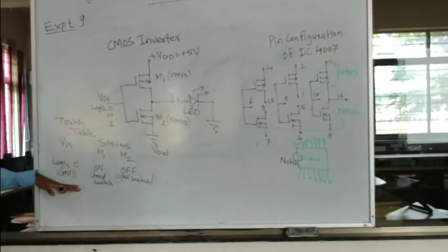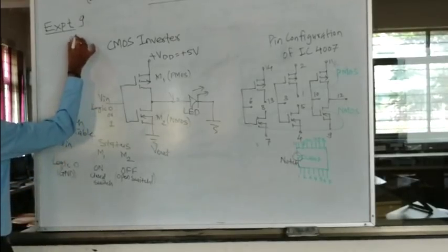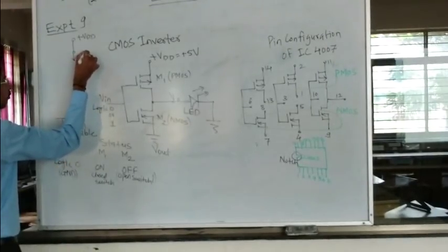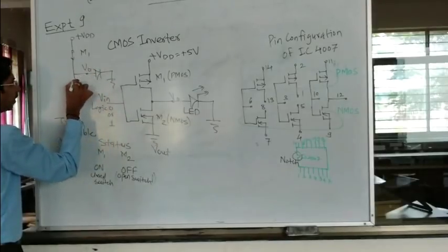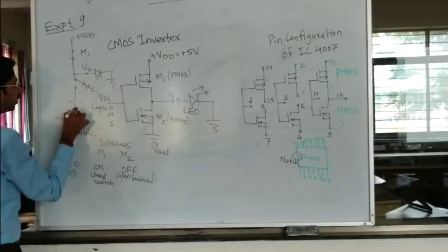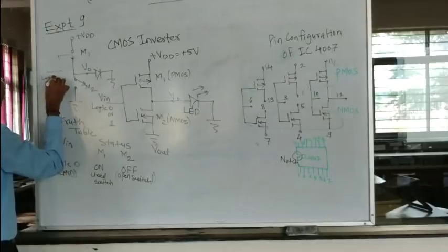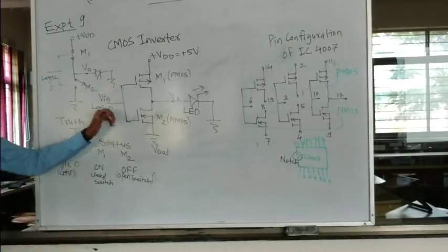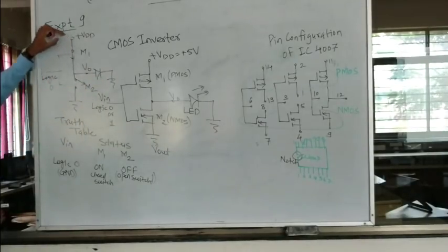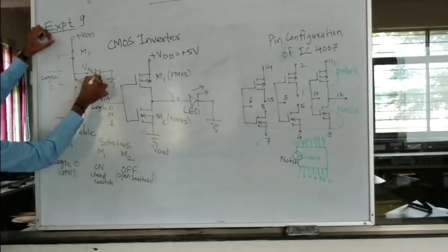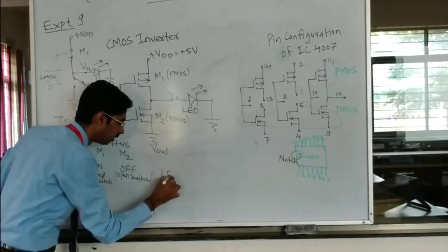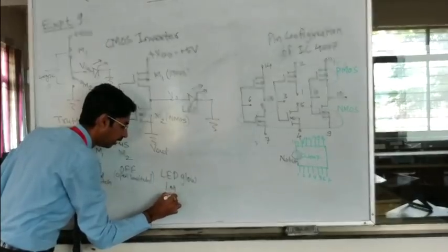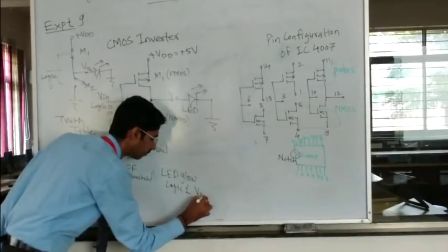If I draw the equivalent circuit for logic 0 input: VDD is connected through M1, which is a closed switch, to the output. M2 is an open circuit connected to ground. So at the output I will get VDD, and at the cathode I will get ground — the LED is in forward bias and will glow. That means the output is logic 1. So when you give logic 0 as input, you will get logic 1 at the output.